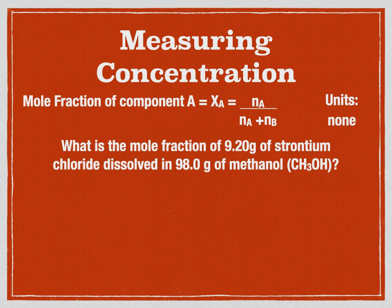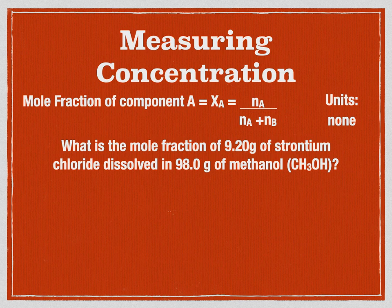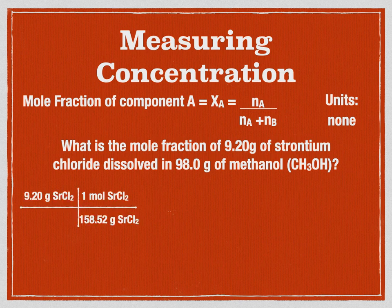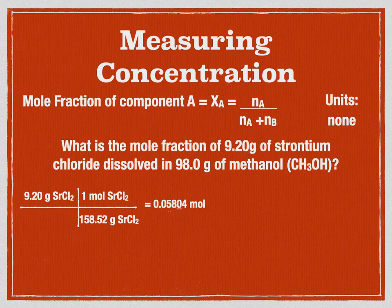Here's a problem: find the mole fraction of 9.20 grams of strontium chloride dissolved in 98.0 grams of methanol. Both are given in grams, so we need to convert to moles. You'll need the chemical formula for strontium chloride and for methanol (provided in the problem). Setting up the game board for strontium chloride grams to moles gives 0.05804 moles — taking one more significant digit than needed.